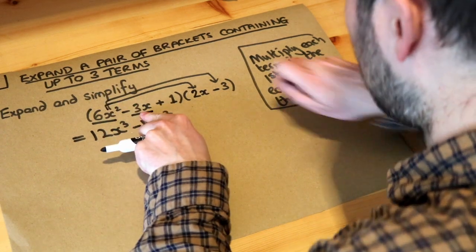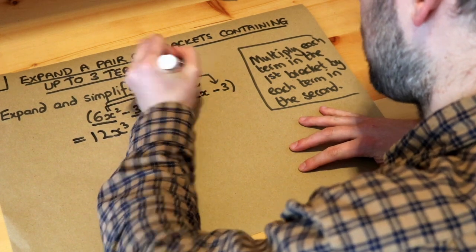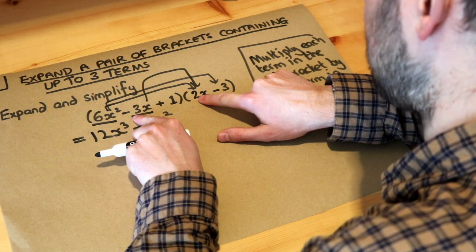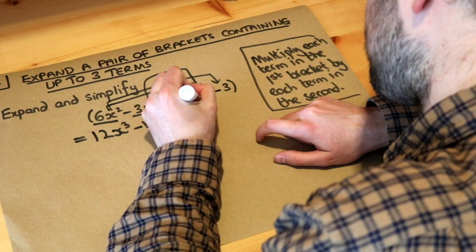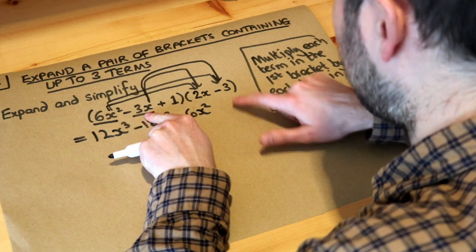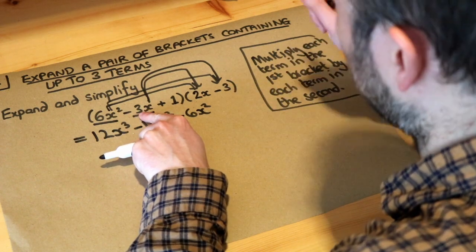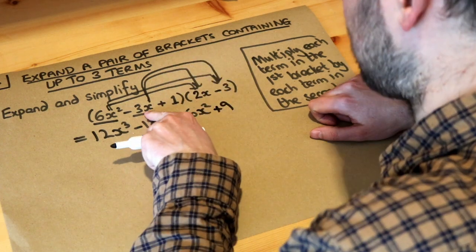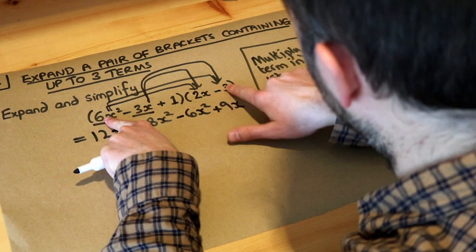Now we do the second thing times each of the things in the second bracket. Minus 3x times 2x — negative times positive is negative, so it's minus 6, and x times x is x², giving minus 6x². Then minus 3x times minus 3 — negative times negative is positive, be really careful about that — 3 times 3 is 9, so it's positive 9x.